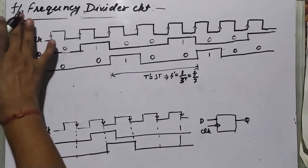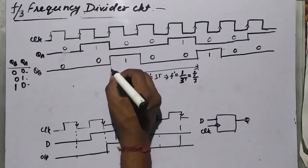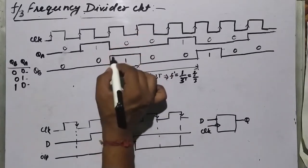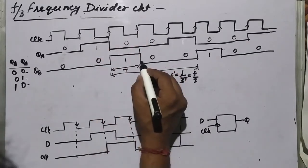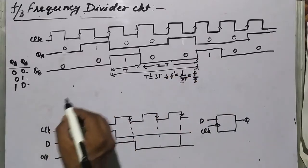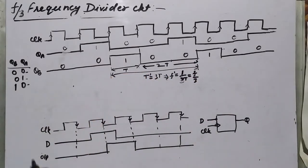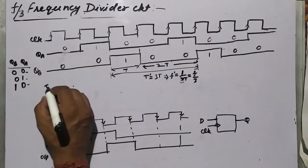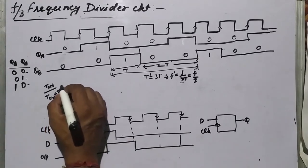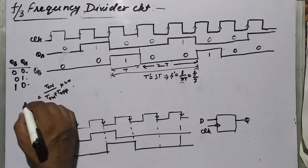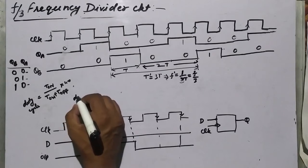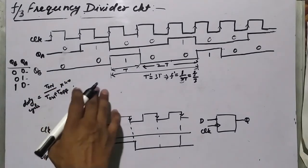This mod-3 counter gives F/3, but notice that T_on equals T and T_off equals 2T. So the duty cycle — T_on divided by (T_on plus T_off) — is not equal to 50%. However, we want a duty cycle of 50%.